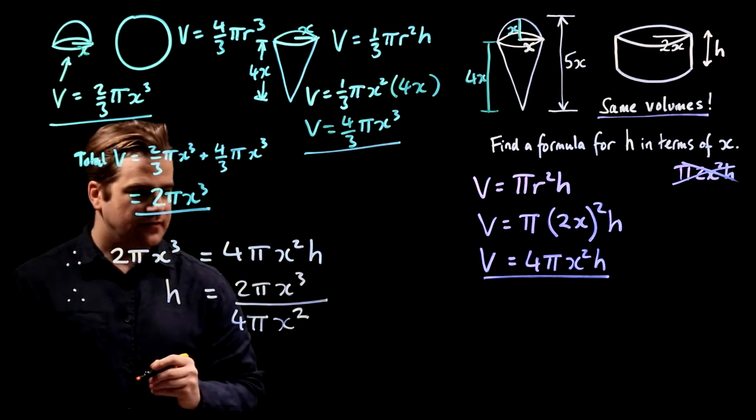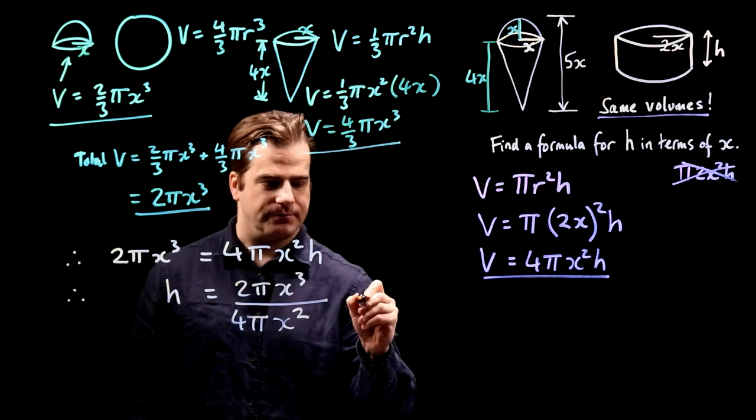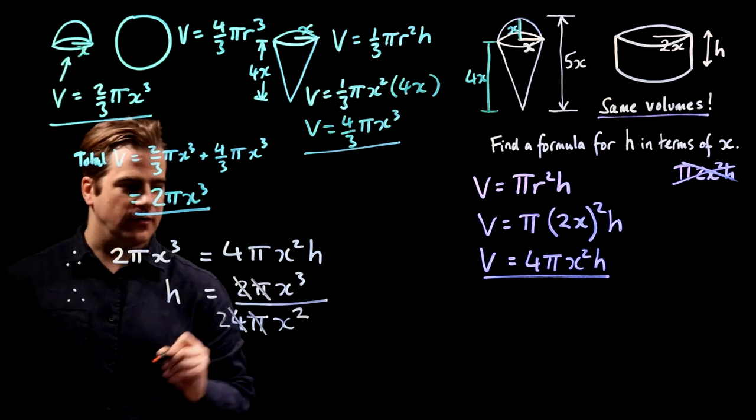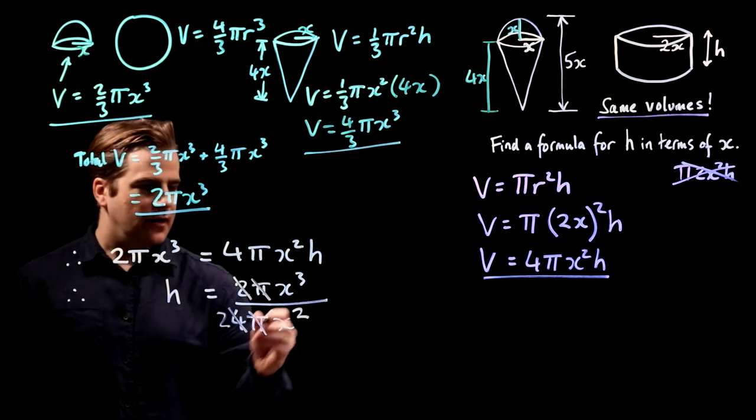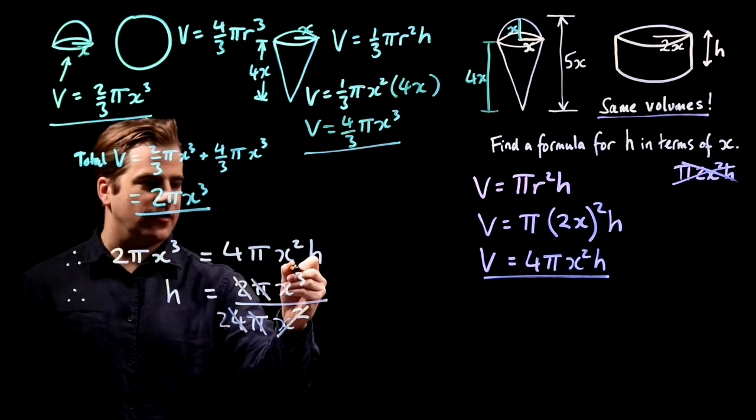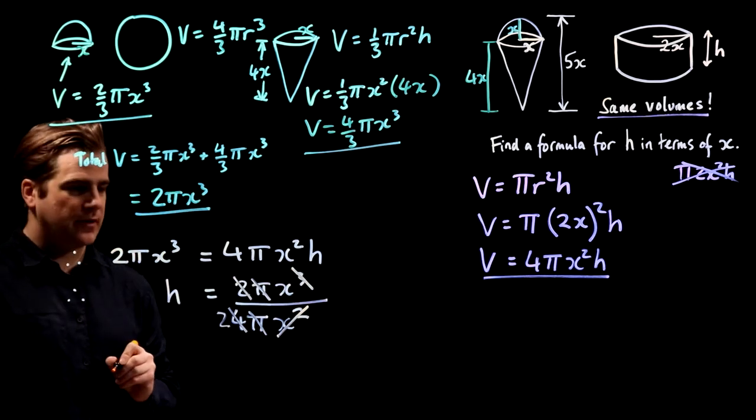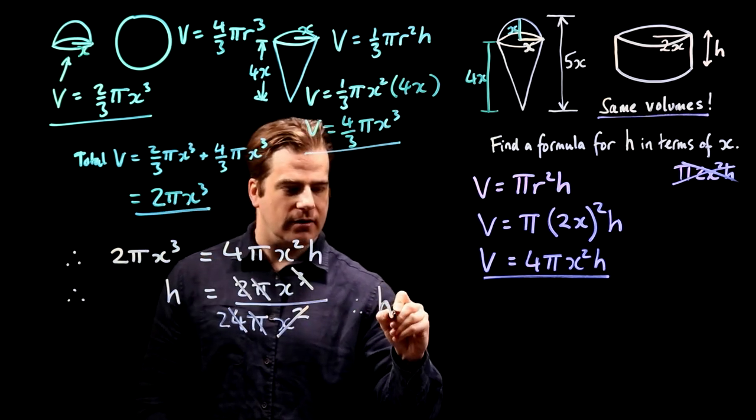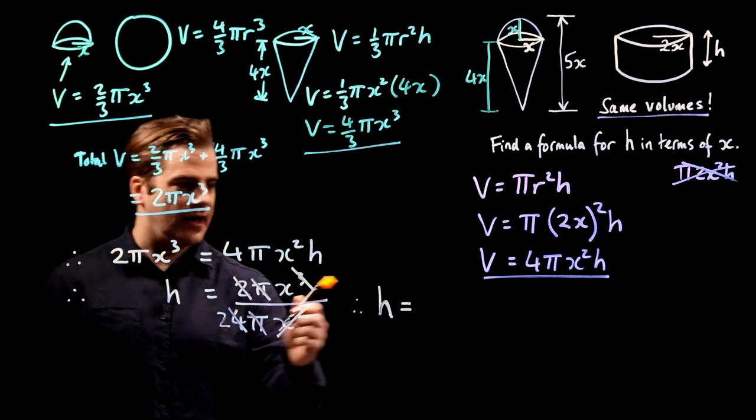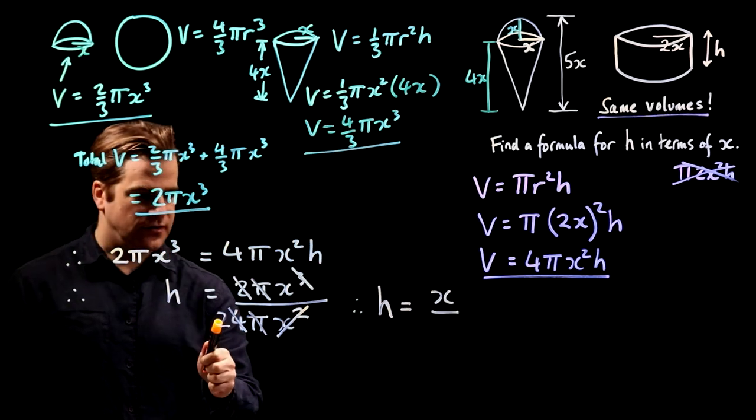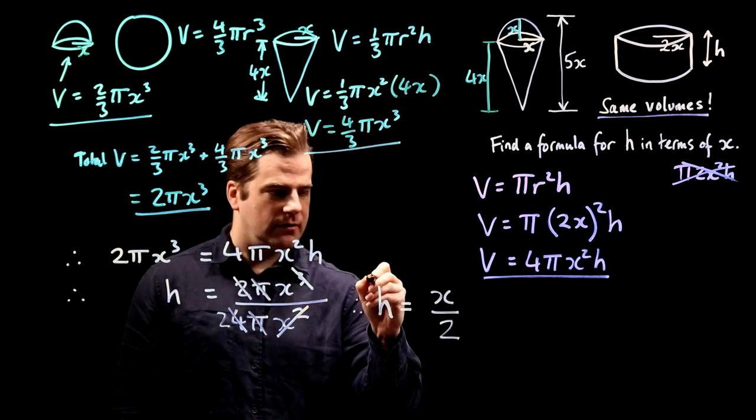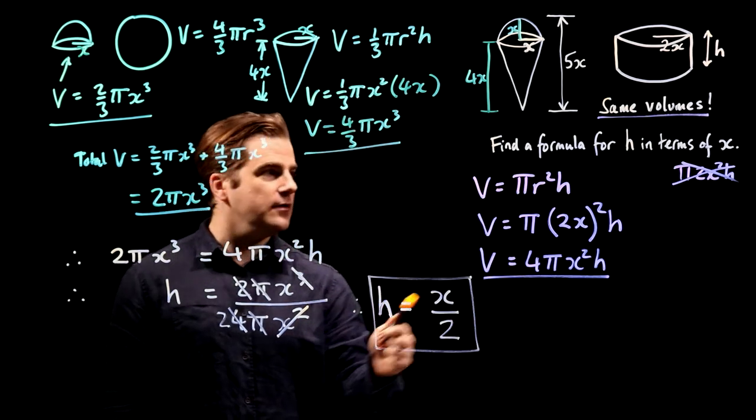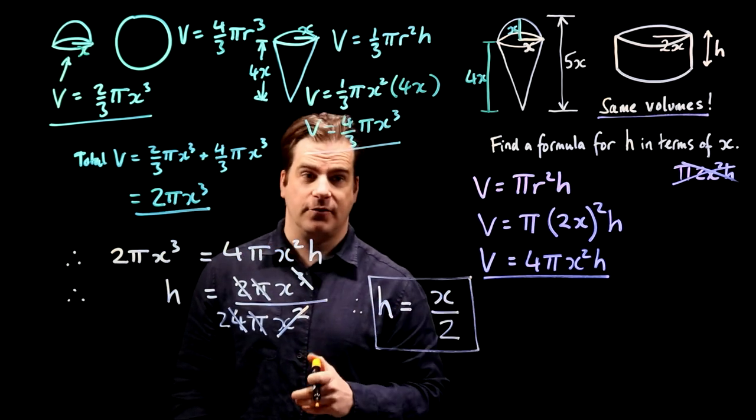So let's neaten that up. π in the top, π in the bottom, 2 can go into 4, 2 there. x² on the bottom, x³ on the top, leaving just 1x on the top. So therefore, h equals x over 2. There you go. There is our formula for h in terms of x. Nice simple formula.